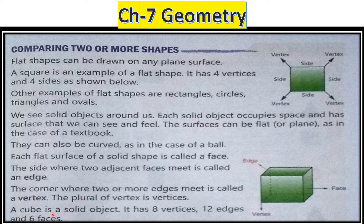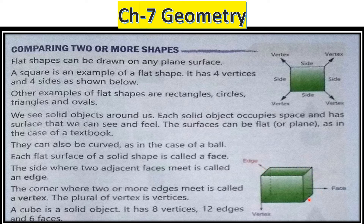A cube looks like a square. A cube is a solid object — it has eight vertices, twelve edges, and six faces. Let's count the faces: one, two, three, four, five, and the back side makes six. Vertices: one, two, three, four, five, six, seven, eight — eight vertices. Edges: one through twelve — twelve edges.